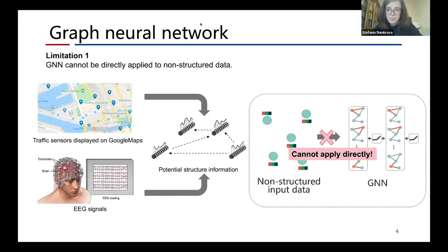However, GNN cannot be directly applied to non-structural data. Despite the existence of some potential structural information under non-structural data such as traffic sensor networks and EEG signal relations, these non-graph structure data cannot be directly fit into GNN because GNN always needs an explicit graph structure as its input.